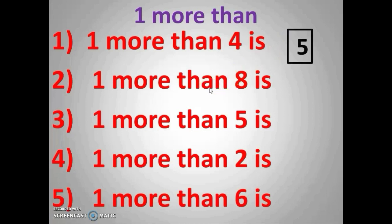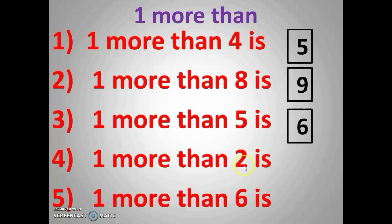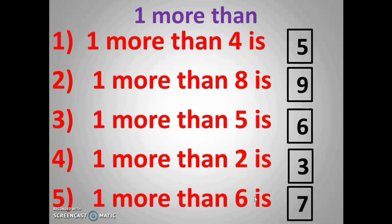Now what is one more than eight? Start saying the numbers: one, two, three, four, five, six, seven, eight — yes, it is nine. What is one more than five? Start counting — what is after five? Yes, it is six. One more than two? Three. One more than six? Seven. Did you all do like this in the worksheet? Yes.